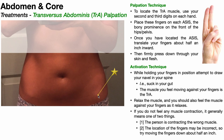Once you find that ASIS, you're then going to very gently move your fingers about half an inch inward. What you're feeling for is as you move medially — toward the midline — you'll actually feel the edge of the ASIS, kind of like going over a cliff. You want to go over until you feel the end of that bone, and if you push down, it's nothing but fleshy tissue there. Once you've gone over the edge of the ASIS, normally about half an inch over, you're then going to press firmly down through your skin and flesh.